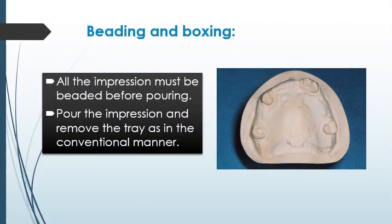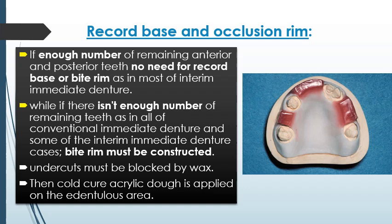All impressions must be beaded before pouring. Pour the impression and remove the tray in the conventional manner. For the record base and occlusion rim: if enough anterior and posterior teeth are present, no record base or bite rim is needed, as in most interim immediate denture cases. However, if there are insufficient remaining teeth — as in all conventional immediate denture cases and some interim cases — a bite rim must be constructed. Undercuts are blocked out with wax, then cold-cure acrylic is applied to the edentulous area.